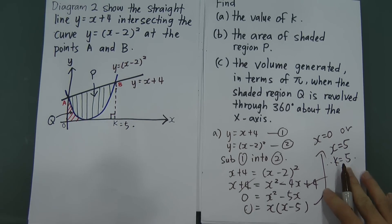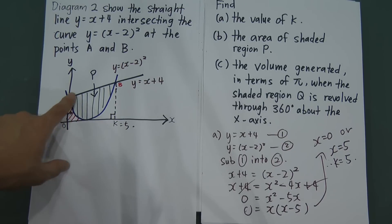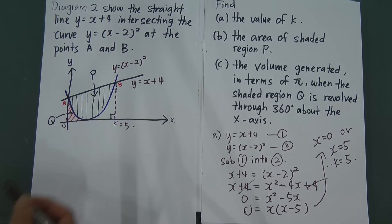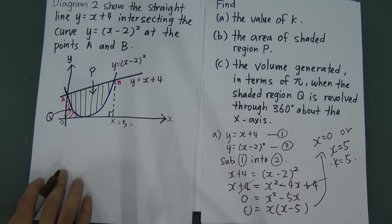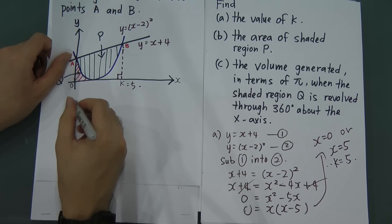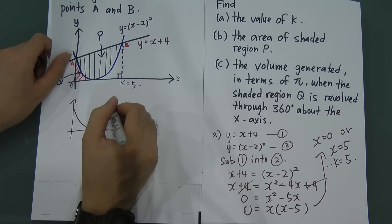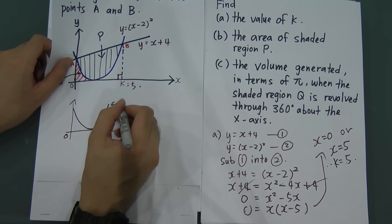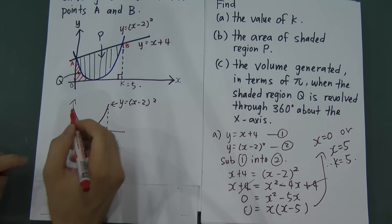For part B, the question asks us to find the area of the shaded region P, which is this area here. Most students will think that you can straight away integrate this curve to get this area — but you are wrong. Because when you integrate this curve from 0 to 5, you only get the area below the curve down to the x-axis, which is not this area.